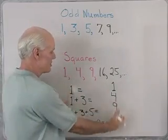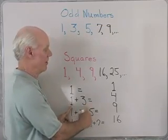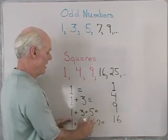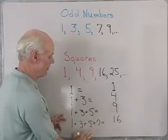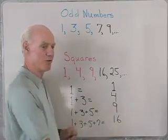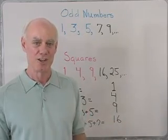And it's a very nice relationship, because if I add the first two odd numbers, I get the second square. If I add the first three odd numbers, I get the third square. The first four odd numbers, I get the fourth square, so on and so forth. So it's a very nice relationship between those two sequences.